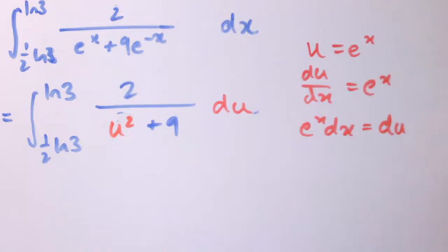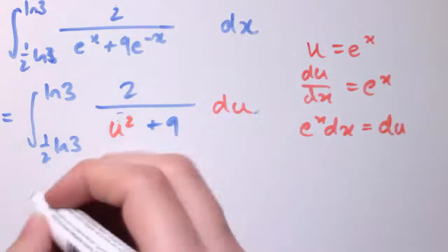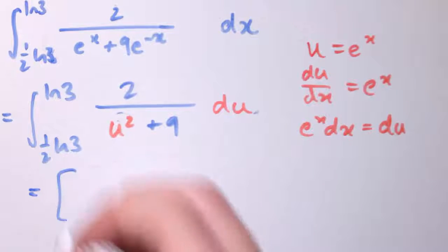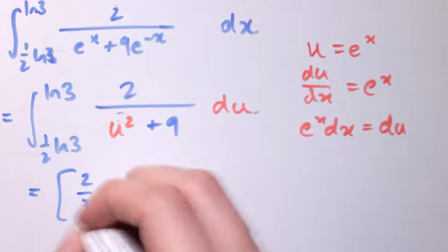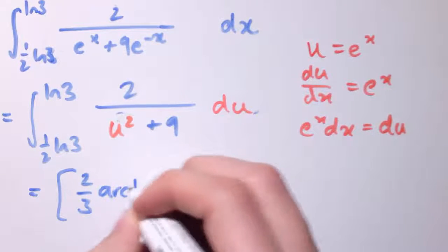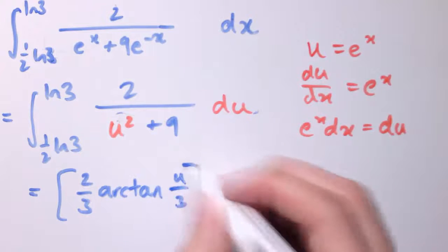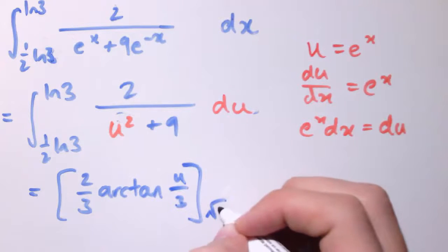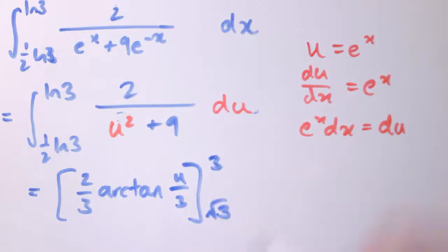And this gives us another arctan integral then. So we've got that this is equal to 2/3 arctan(u/3) between √3 and 3.